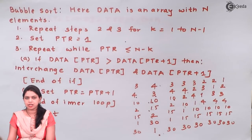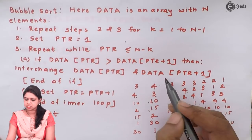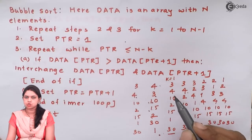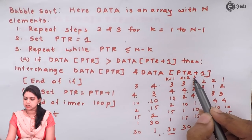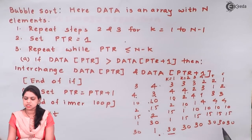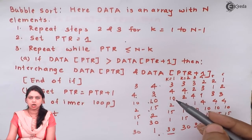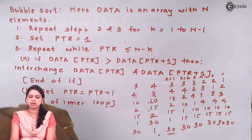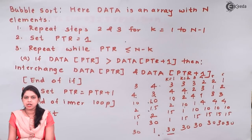As you can see, at every iteration the largest element bubbled to the last position. Each iteration can be called a pass — this was pass 1, pass 2, and so on up to pass 6. At the end of the sixth pass the list was sorted, with the largest element at the last position at every pass. That is why it is called bubble sort — like a bubble, the largest element comes down to the last position.